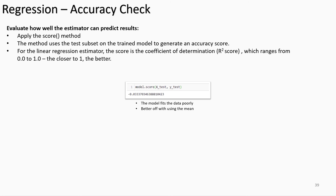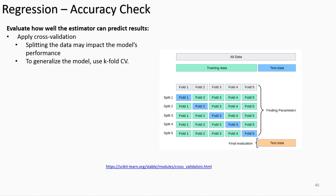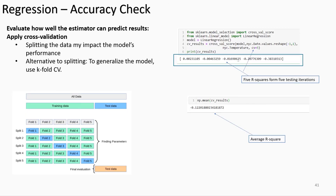A metric used to measure how well the model fits the data is R-squared. We apply the score method on the model to examine the proportion of variance explained by the independent variable. This metric ranges from zero to one — the closer to one, the better. In our case, the metric shows a value near zero (negative zero), indicating the model is not sufficient. Another accuracy check is cross validation, which splits the training data into a specified number of subsets called folds.